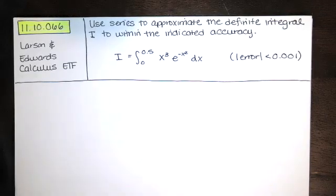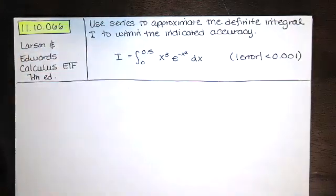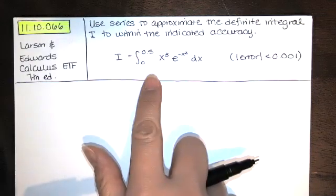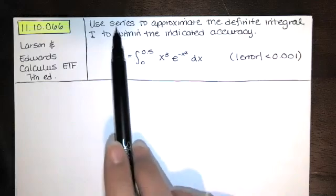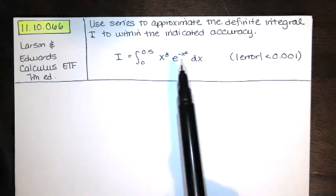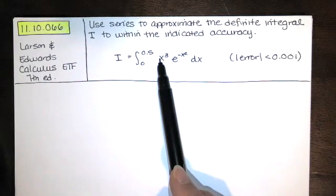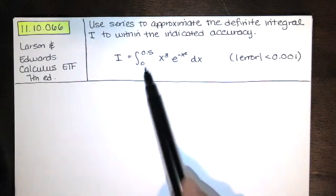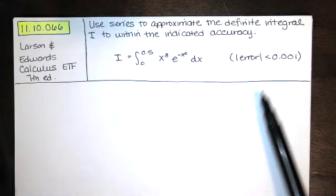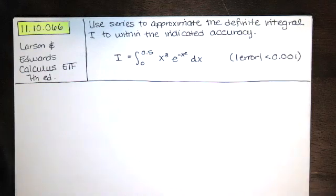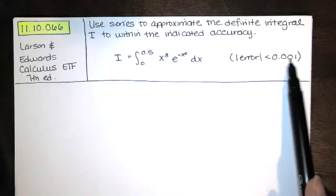In this video, we solve problem 11.10.066 from the Larson and Edwards Calculus Early Transcendental Functions text, 7th edition. We're asked to use series to approximate the definite integral to within the indicated accuracy. We're going to find an infinite series representing the value of this integral by finding a series for the integrand, anti-differentiating it, and plugging in the bounds by the fundamental theorem. If we want to approximate that infinite series with an error less than 0.001, we compute partial sums and find two consecutive ones with a difference less than 0.001.